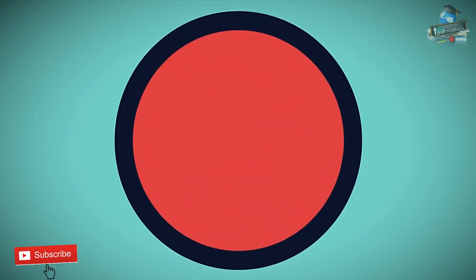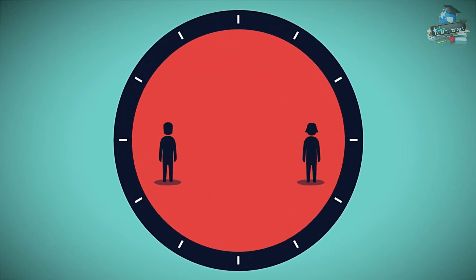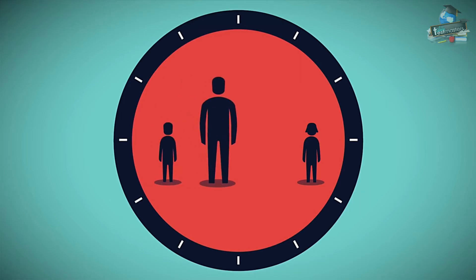Puberty is the timeframe when secondary sexual characteristics develop — in other words, when a boy matures physically to a man and a girl to a woman.